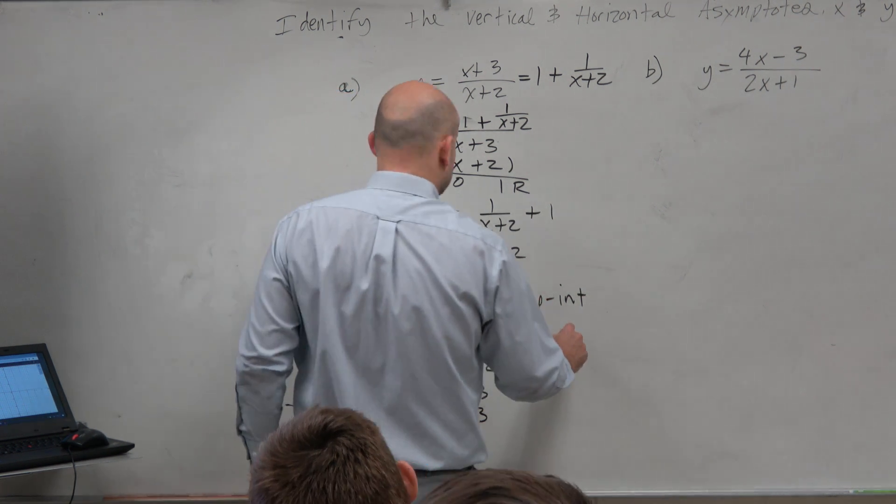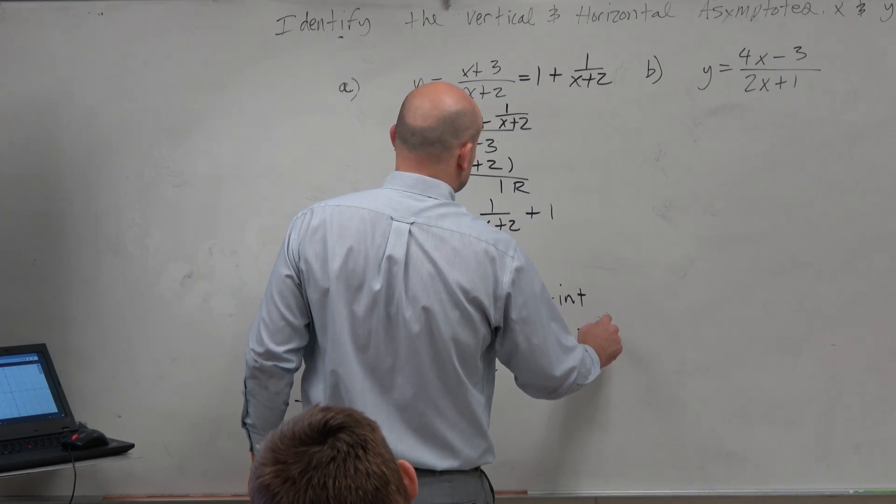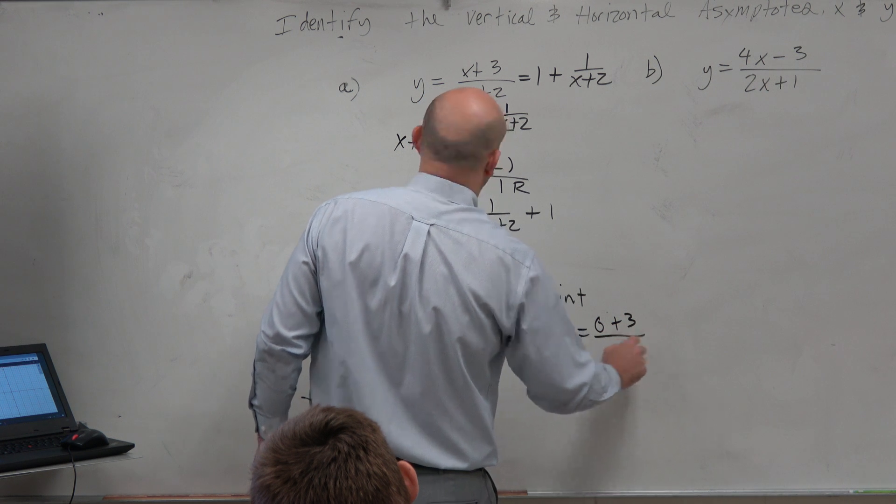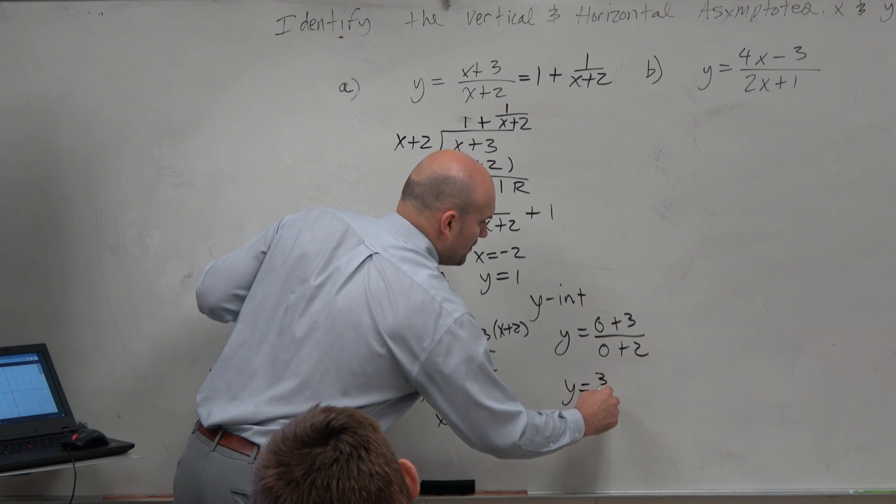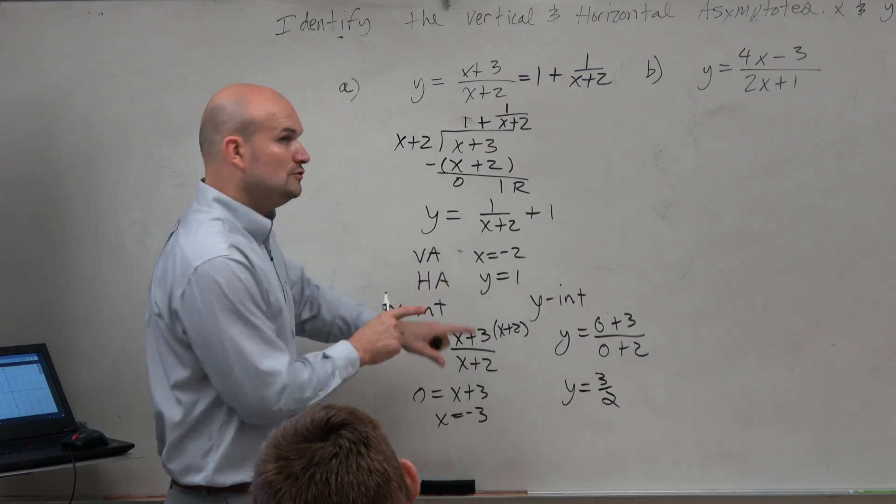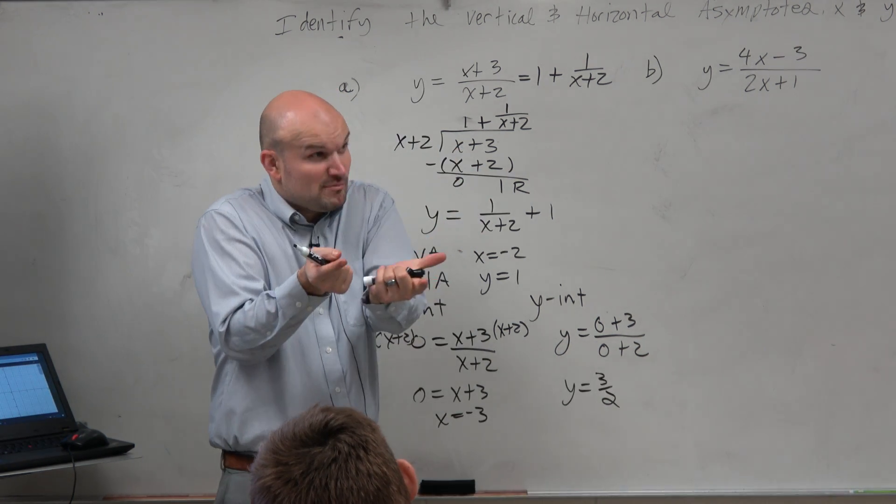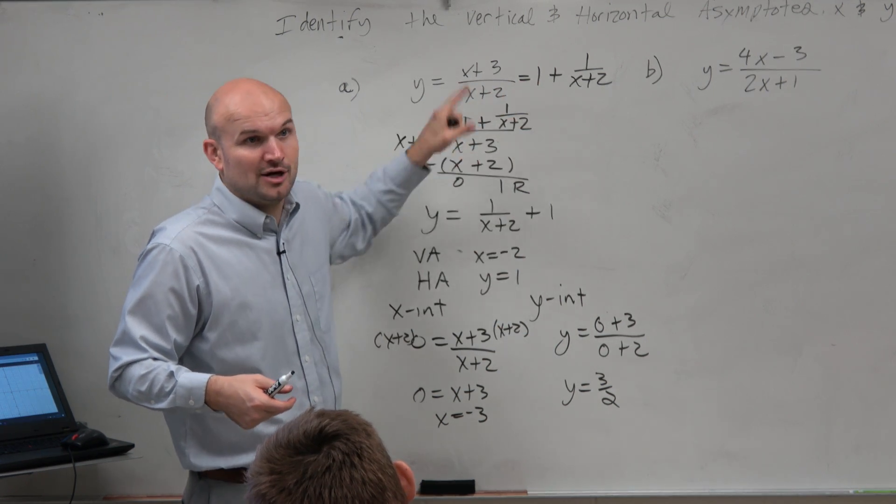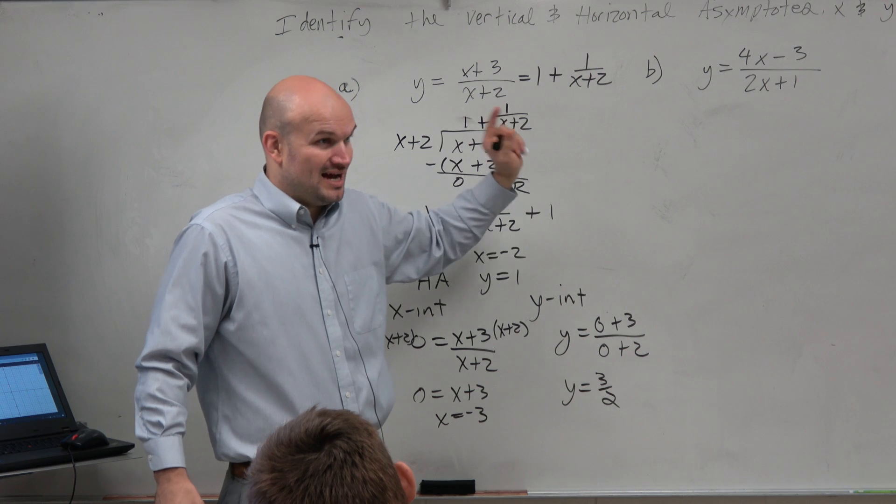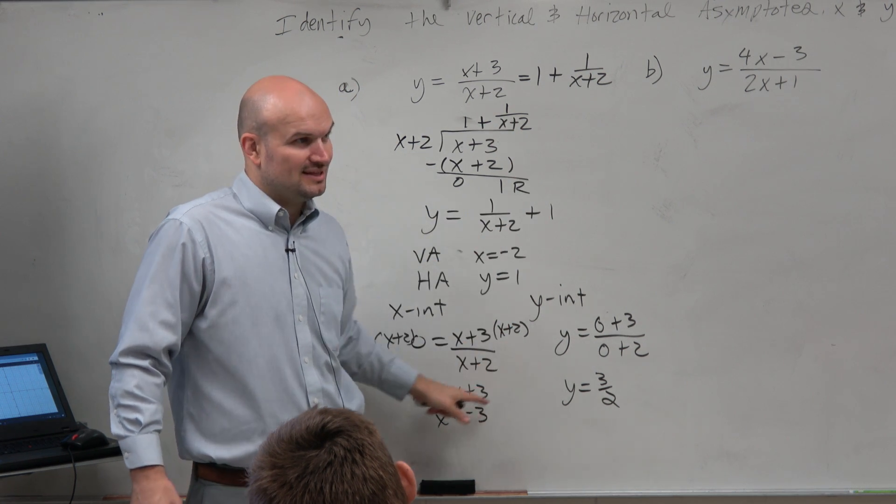For my y-intercept, I have y equals 0 plus 3 over 0 plus 2, which is y equals 3 halves. If you try to do that exact same way, if you remember from what we did last round, plugging in x and solving for y, or plugging in 0 for y and solving for x, it was more complicated than this, right?